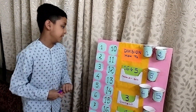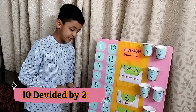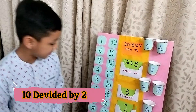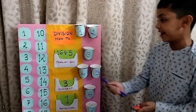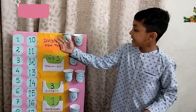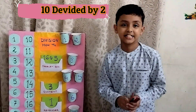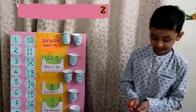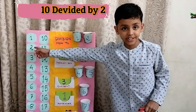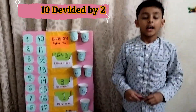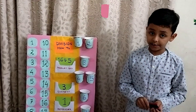Now I'm going to do one more division. I will show you the problem 10 divided by 2. You need 10 sticks — here I have a total of 10 sticks. The divisor is 2, so in each cup I need to put 2 sticks.